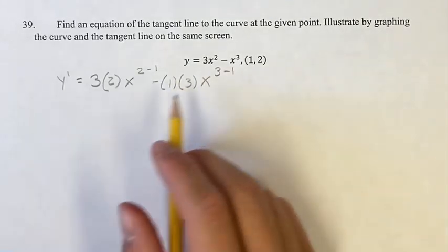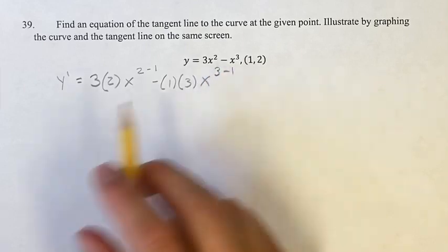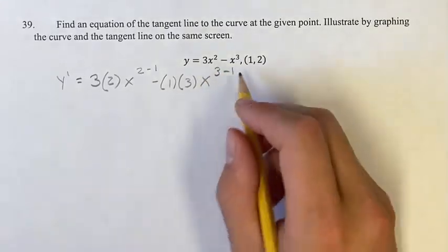So same thing for both of these: bring the coefficient out, bring the exponent down, new exponent subtract 1 from the old one.